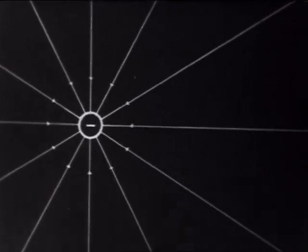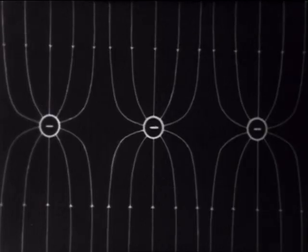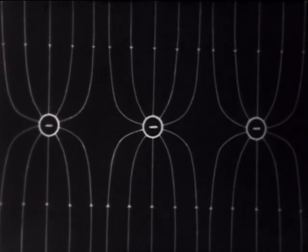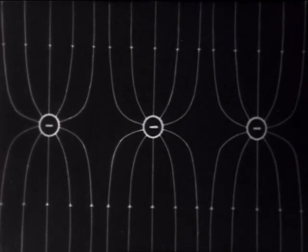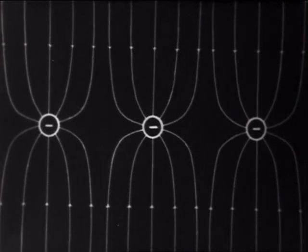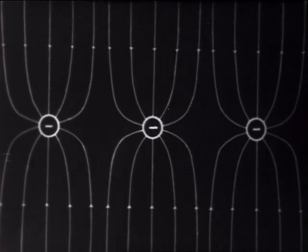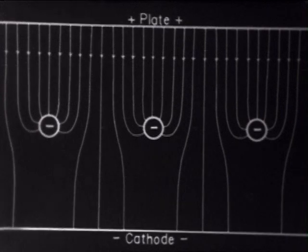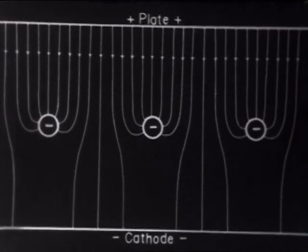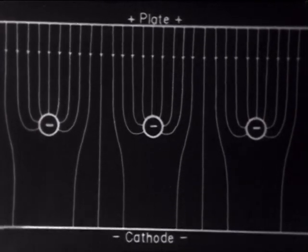Around a cylindrical conductor, you have this type of field. Several parallel conductors produce a field of this appearance. If this field is superimposed on a homogeneous field between an anode and a cathode, you have the field picture for a triode tube.